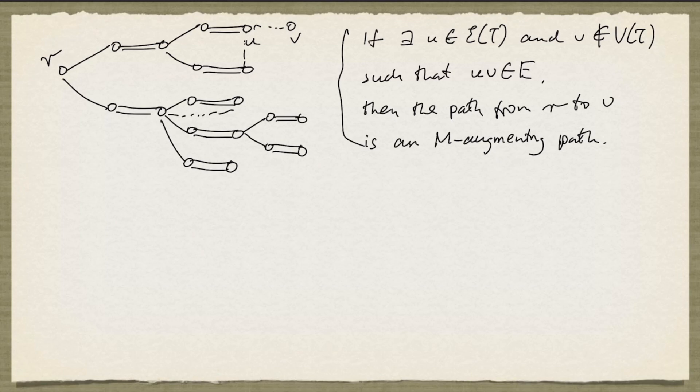But if the graph is not bipartite, we might not be in this situation, and the tree might not be frustrated. And this is what makes the perfect matching problem in non-bipartite graphs a bit tricky. And we'll see how to deal with that in a later video.